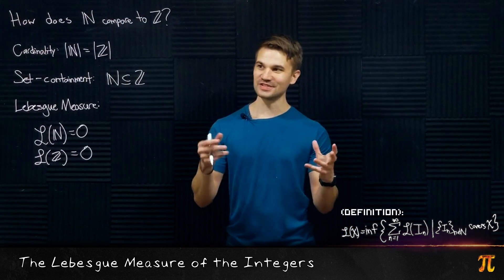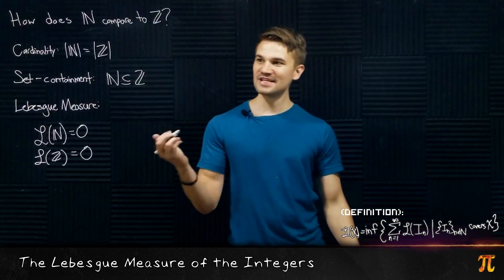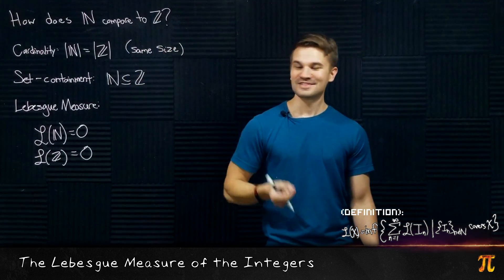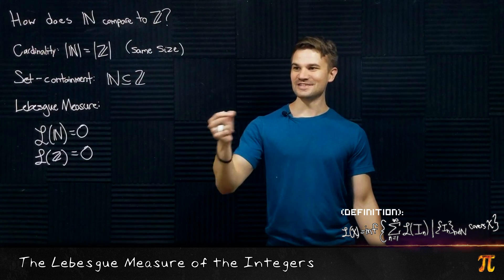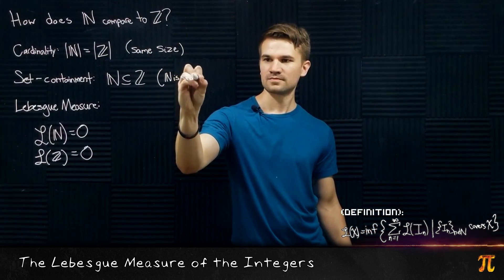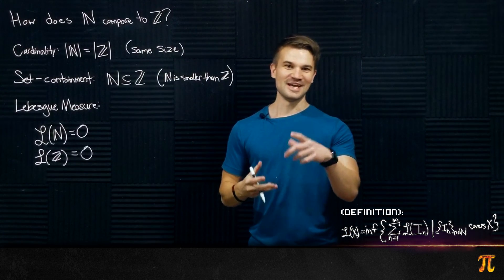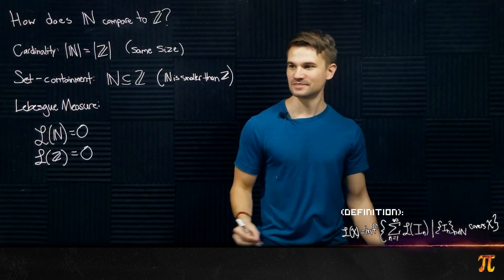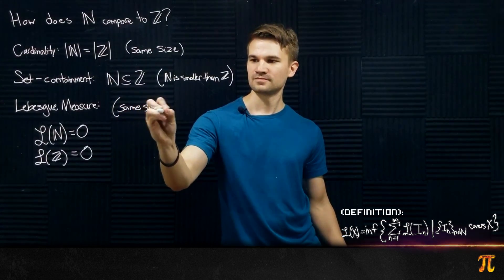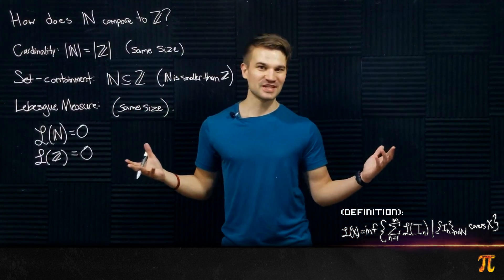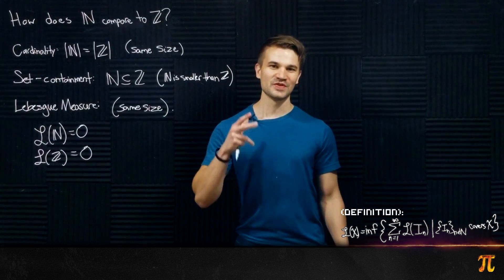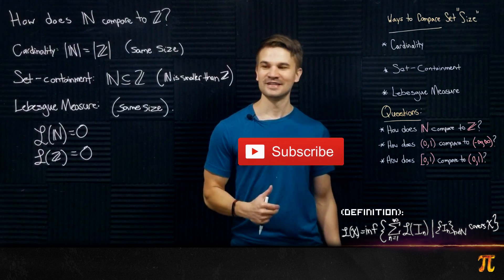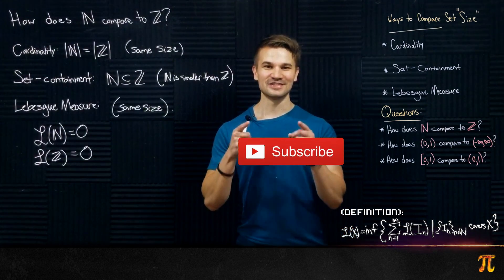In conclusion: cardinality-wise, N and Z are the same size. Set-containment-wise, N is smaller than Z. And in the sense of Lebesgue measure, they are the same size — as is any countable set and any finite set. In the next video we'll be comparing the other two pairs of sets we have remaining. But for now that's going to do it, and I'll see you guys in the next video.